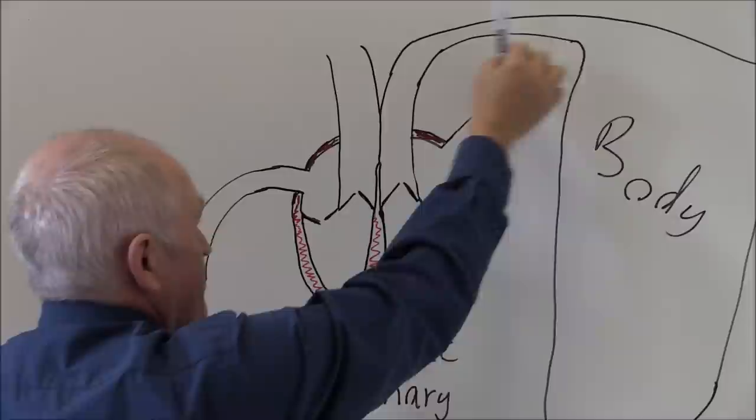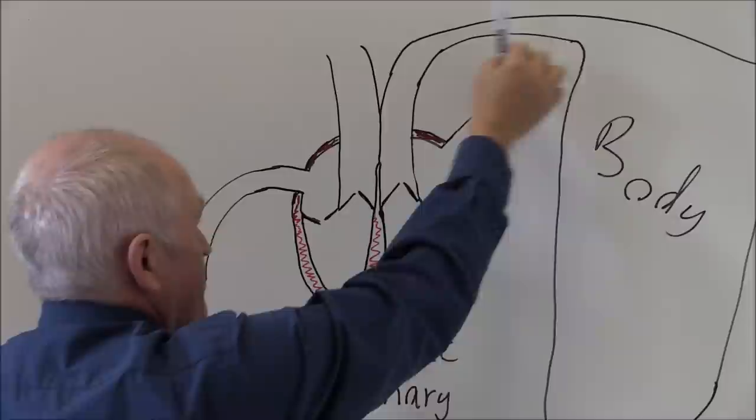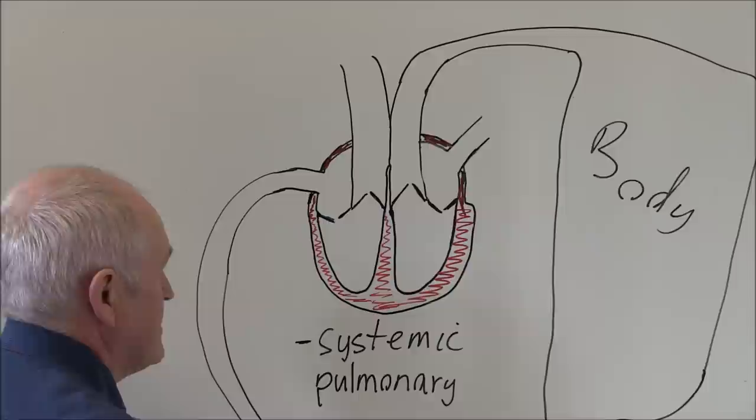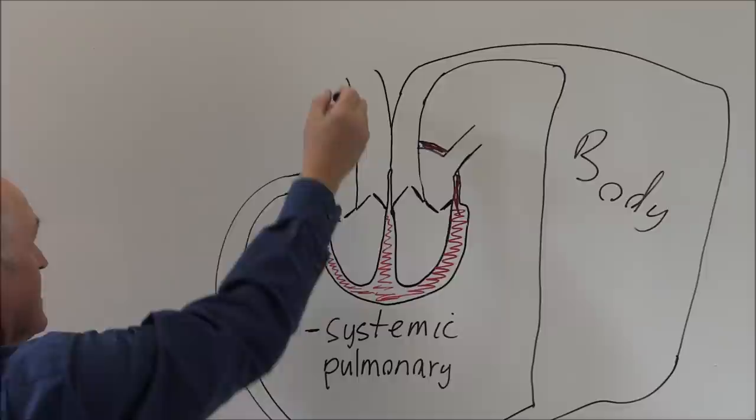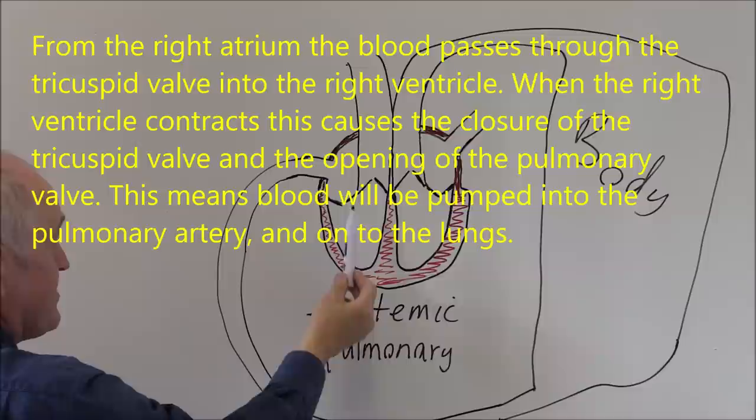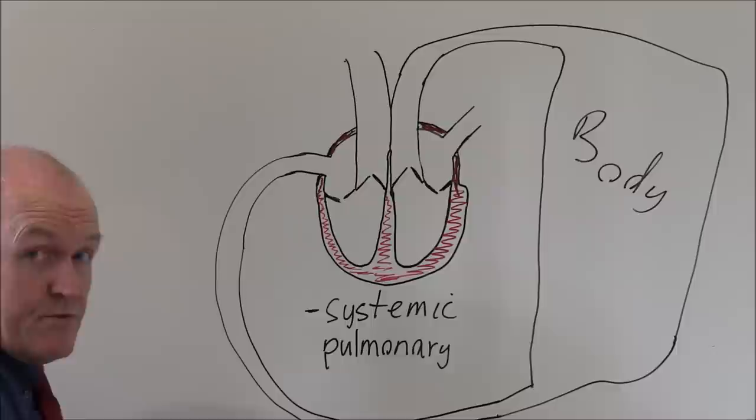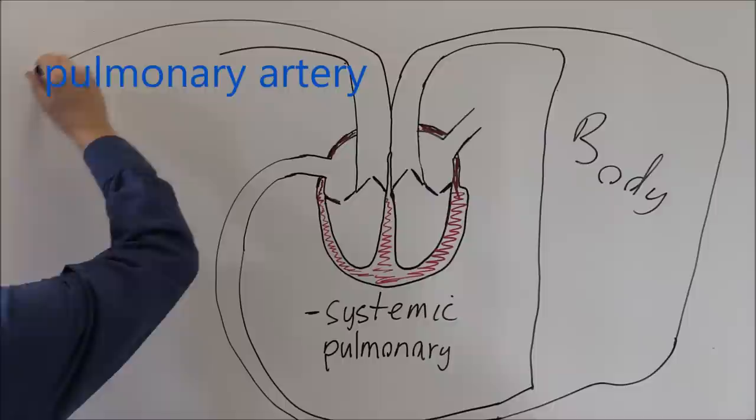So the left side of the heart acting as a pump is the body pump, pumping blood to the body into the systemic circulation. The blood goes from the right atrium to the right ventricle. When the right ventricle contracts, the blood is ejected into the pulmonary artery taking the blood to the lungs.